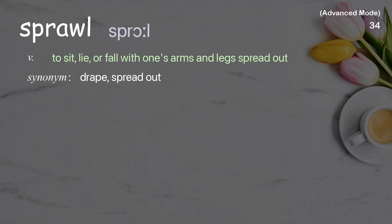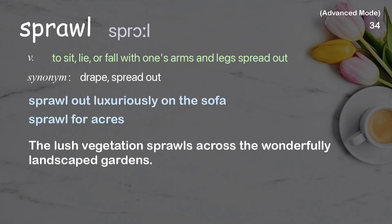Sprawl: To sit, lie, or fall with one's arms and legs spread out. Examples: Sprawl out luxuriously on the sofa, sprawl for acres. The lush vegetation sprawls across the wonderfully landscaped gardens.